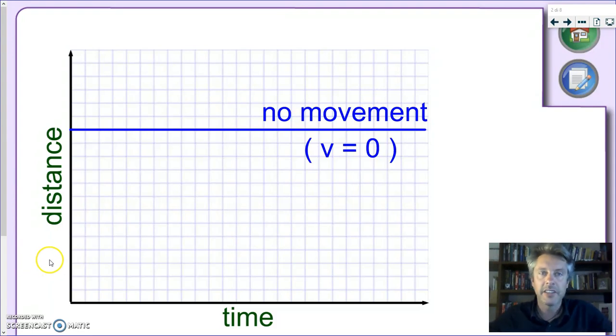How does a distance-time graph look like? First of all, we need to draw our axis, as I've done here. Time in this kind of motion graph will always be on the horizontal axis, the x axis. And in this case, distance will be on the vertical axis, the y axis.